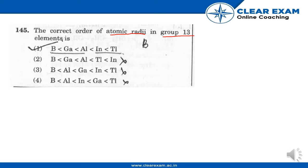As we know, the atomic and ionic radii of Group 13 elements are lower than those of alkaline earth metals of Group 2, primarily due to the greater nuclear charge of Group 13 elements compared to Group 2 elements. On moving down the group, the atomic radius generally increases.